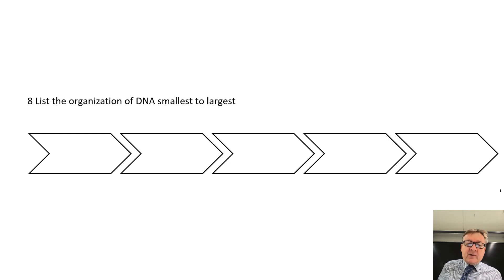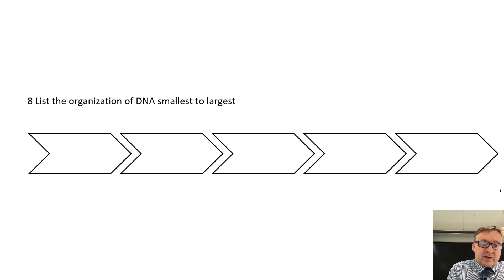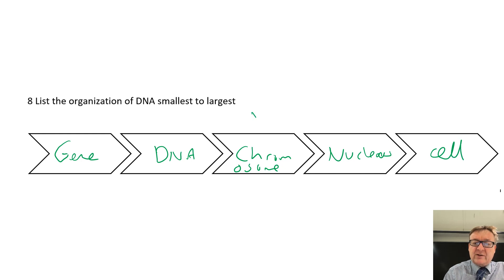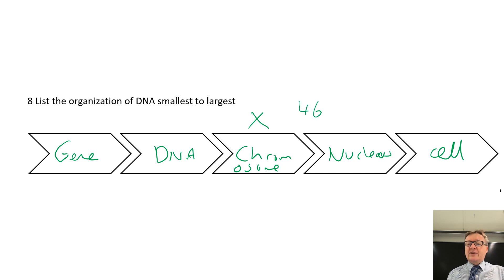List the organisation of DNA from smallest to largest: gene, DNA, chromosome, nucleus, and cell. Your chromosomes are the things you always see as an X shape - inside the nucleus you've got 46 chromosomes.